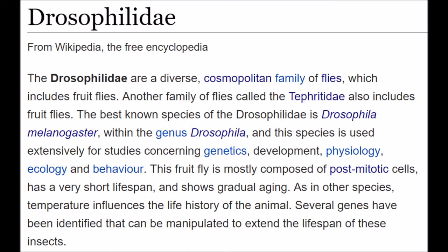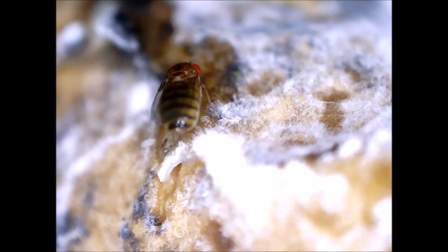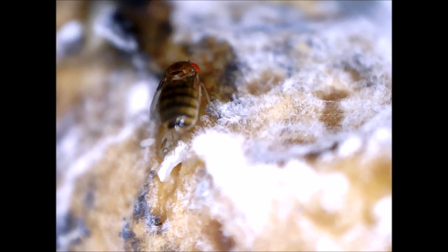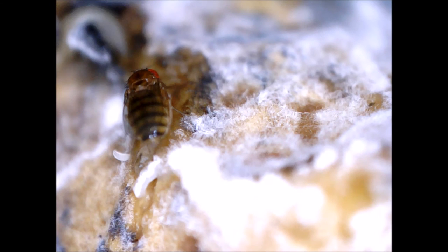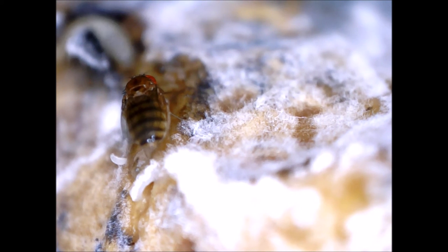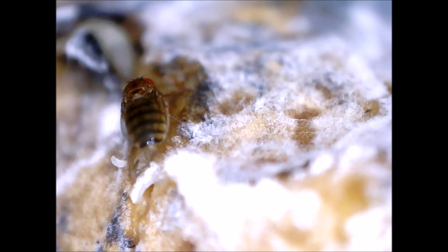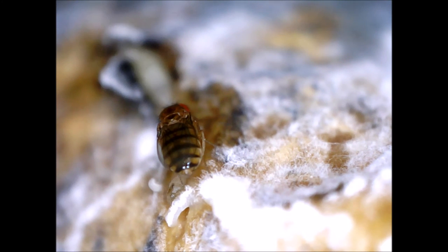This article on the Drosophila family says: This fruit fly is mostly composed of post-mitotic cells, has a very short lifespan, and shows gradual aging. As in other species, temperature influences the life history of the animal.